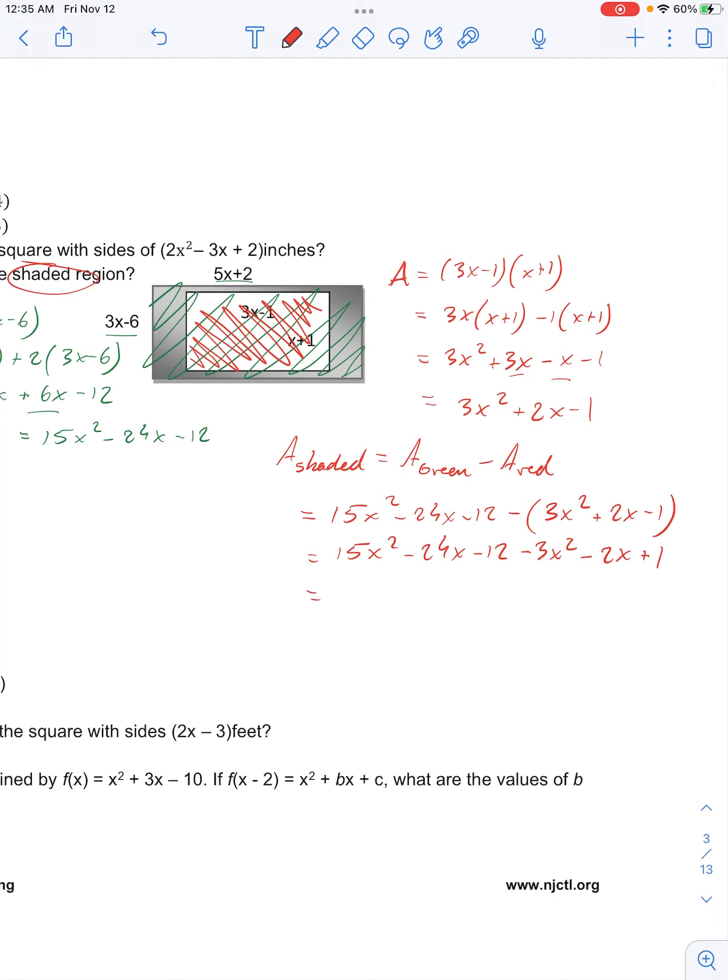Then we'll look to combine like terms. We have 15x squared minus 3x squared is 12x squared, then minus 24x minus 2x is minus 26x, and then negative 12 plus 1 is negative 11. This is our final answer.